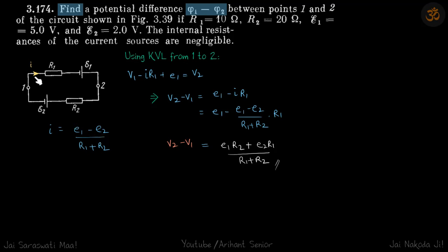We have got the current and now let's go from 1 to 2 using KVL. V1 minus Ir1 plus E1 is equal to V2 which gives V2 minus V1.